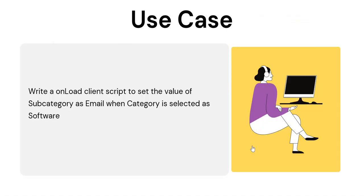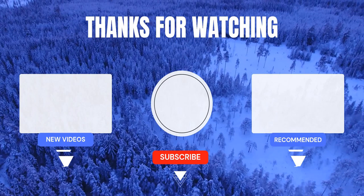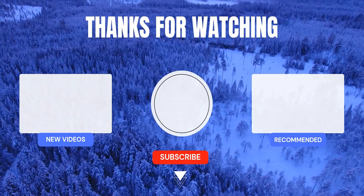You can use UI policies to make fields mandatory, non-mandatory, visible, or invisible, but if you require scripting to check conditions that are not available in UI policy, you can use client scripts with g_form. I hope this video was helpful. Please let me know in the comments if you have any questions on the methods discussed, and please subscribe and hit the like button.